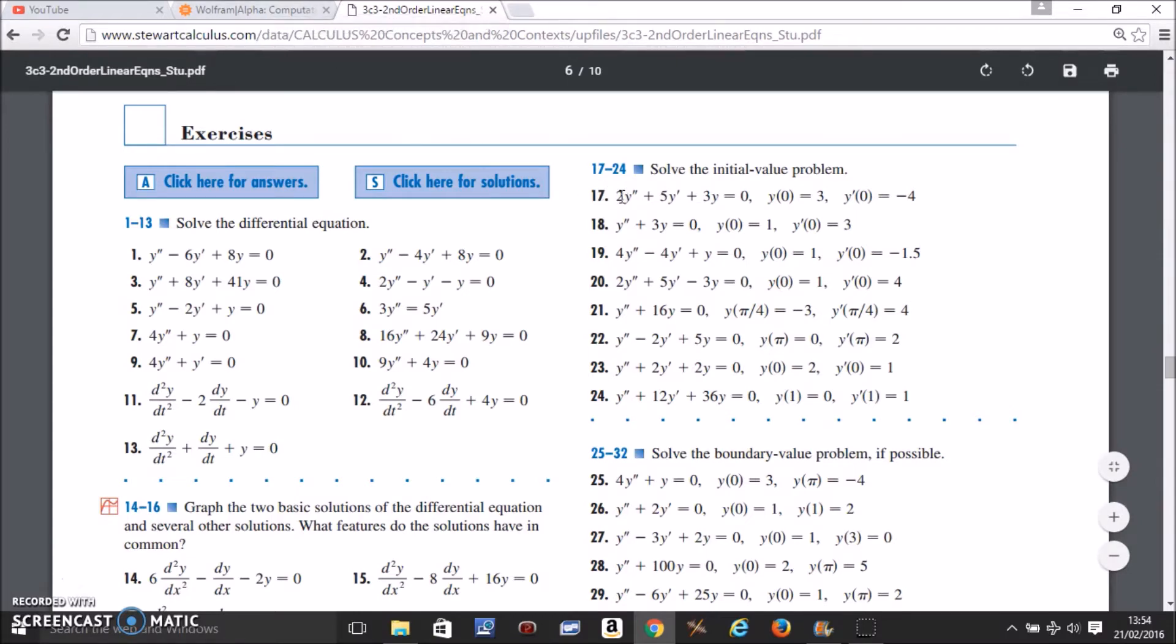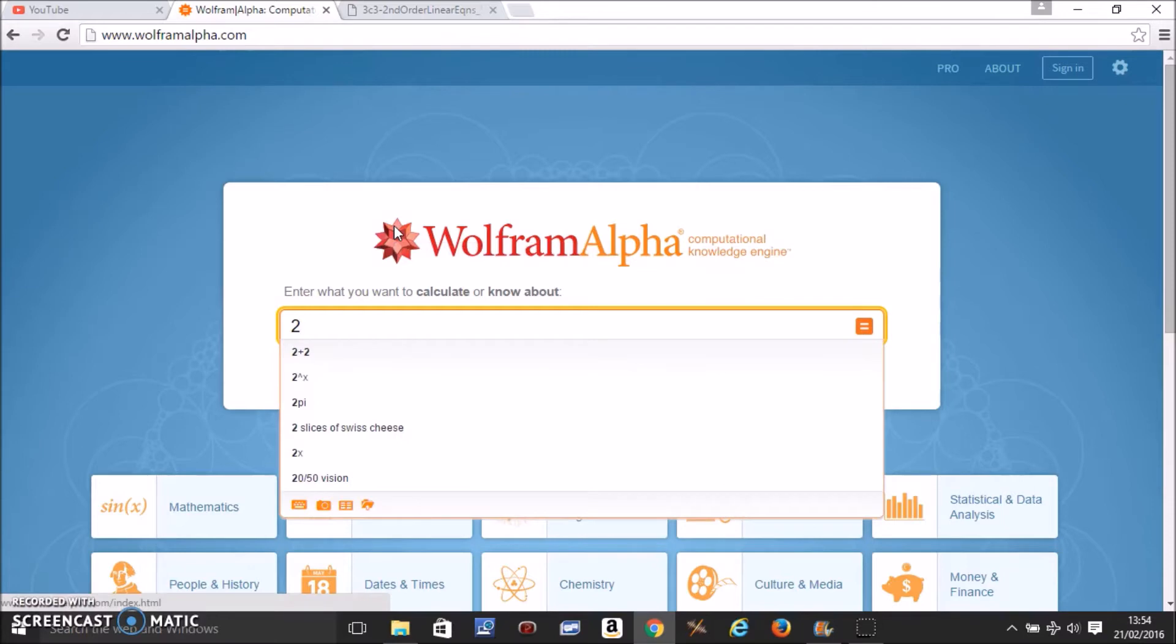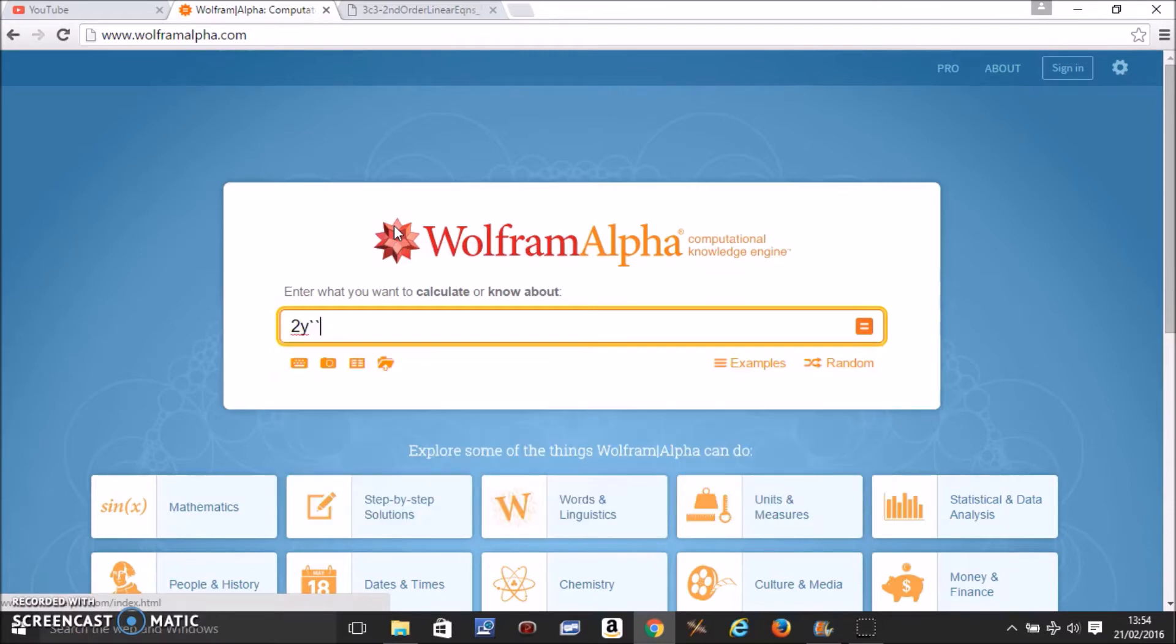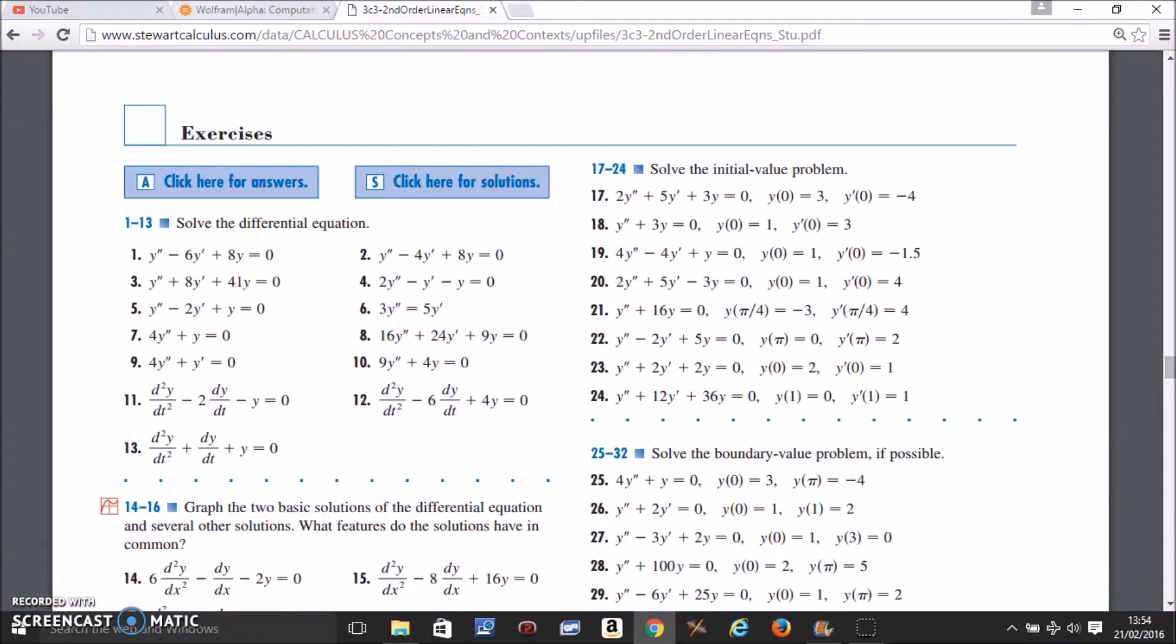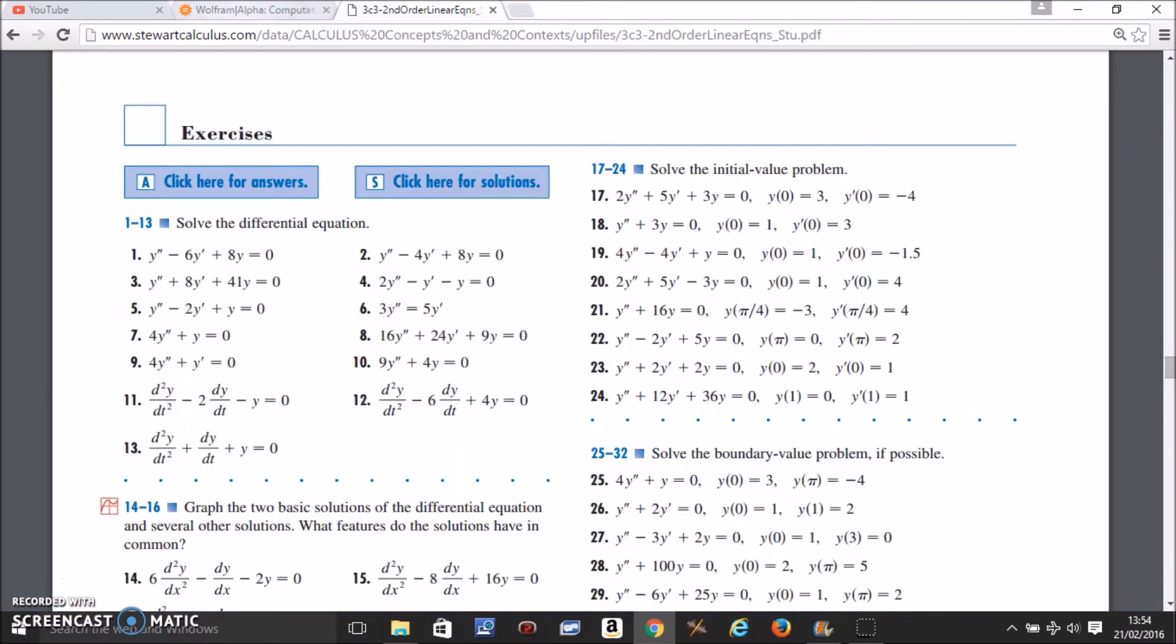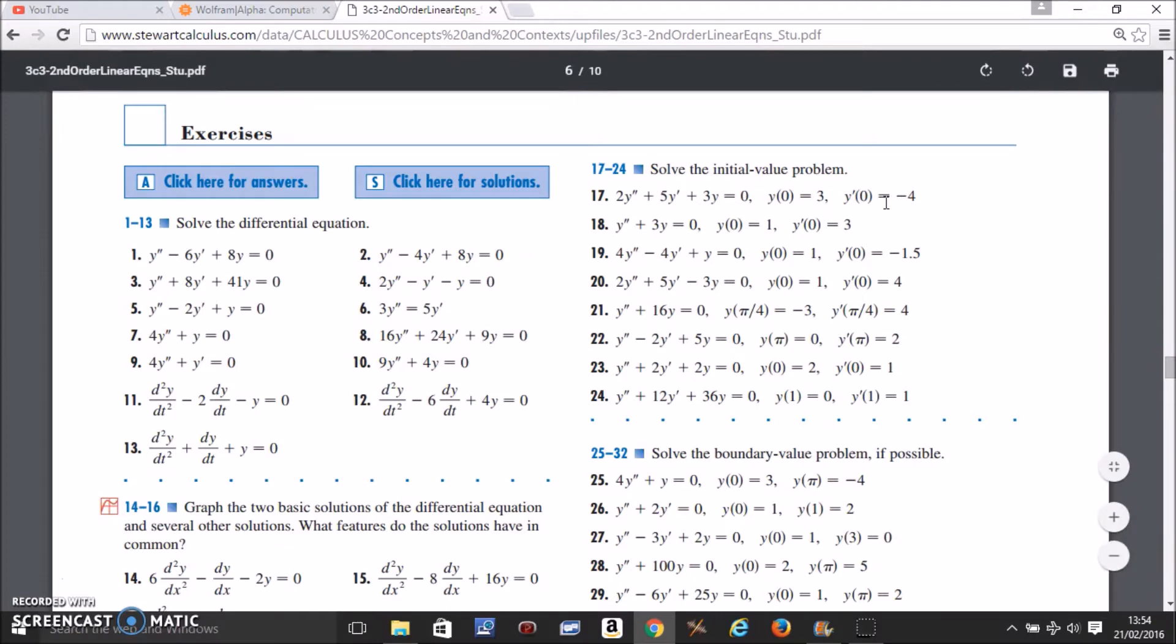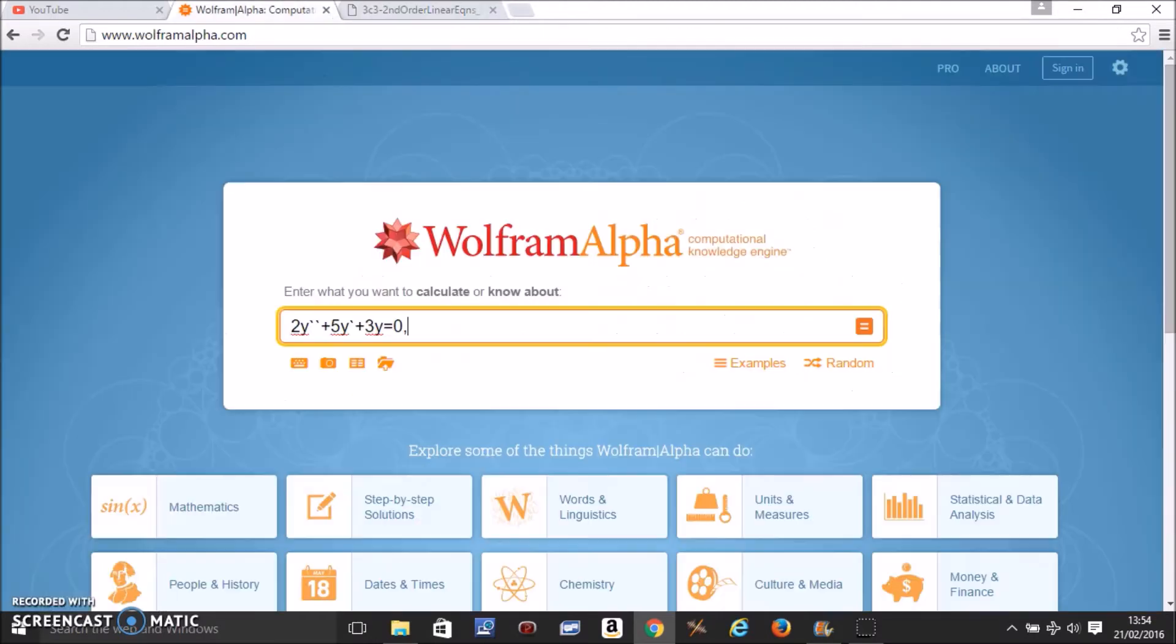You have to put in exactly the way it is in Wolfram Alpha. So all you have to do is 2y double prime plus 5y prime plus 3y equals 0. And also put the initial conditions exactly the way it is.